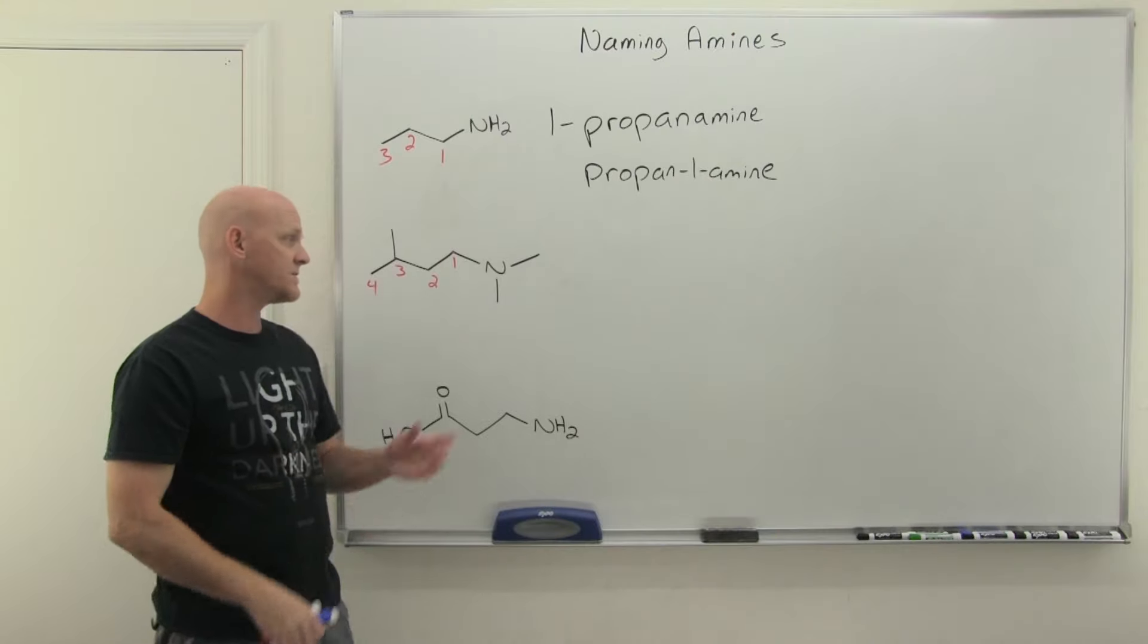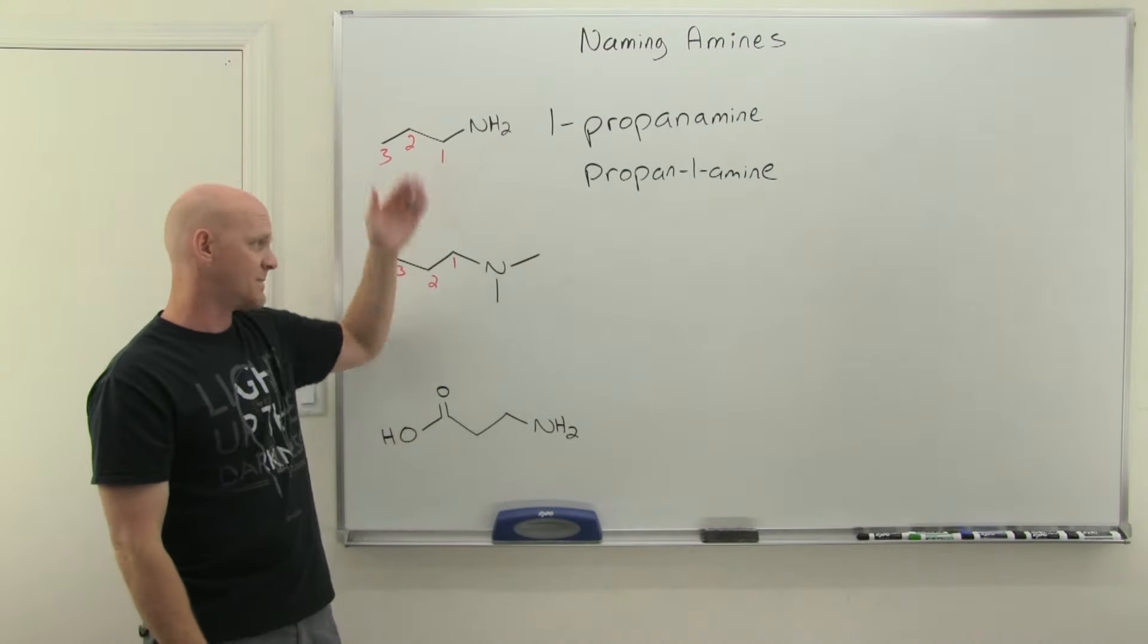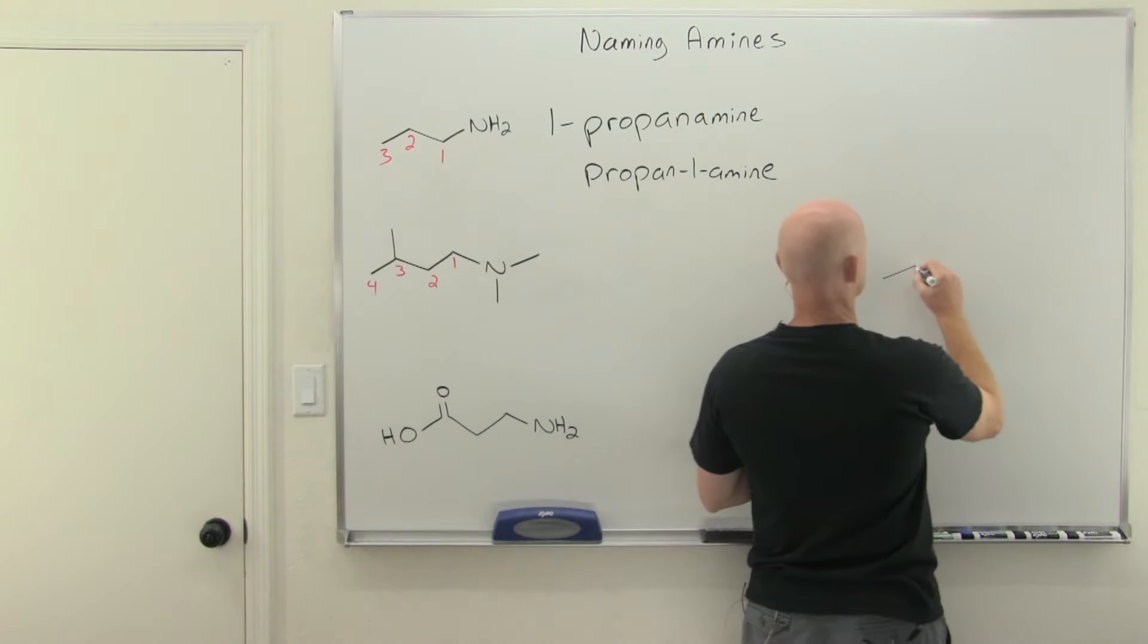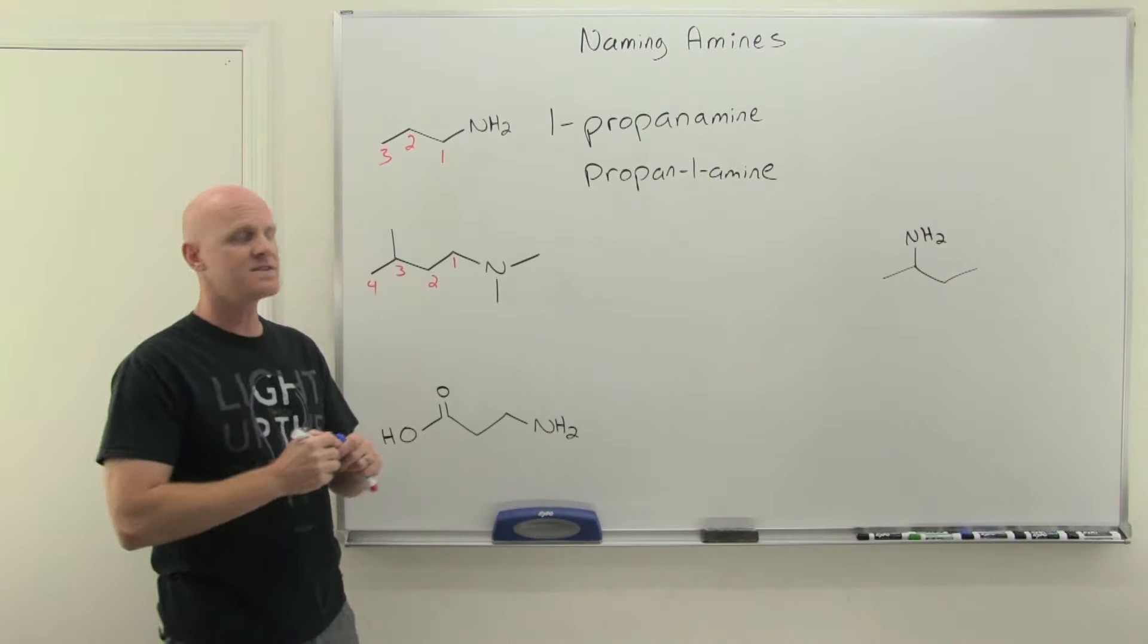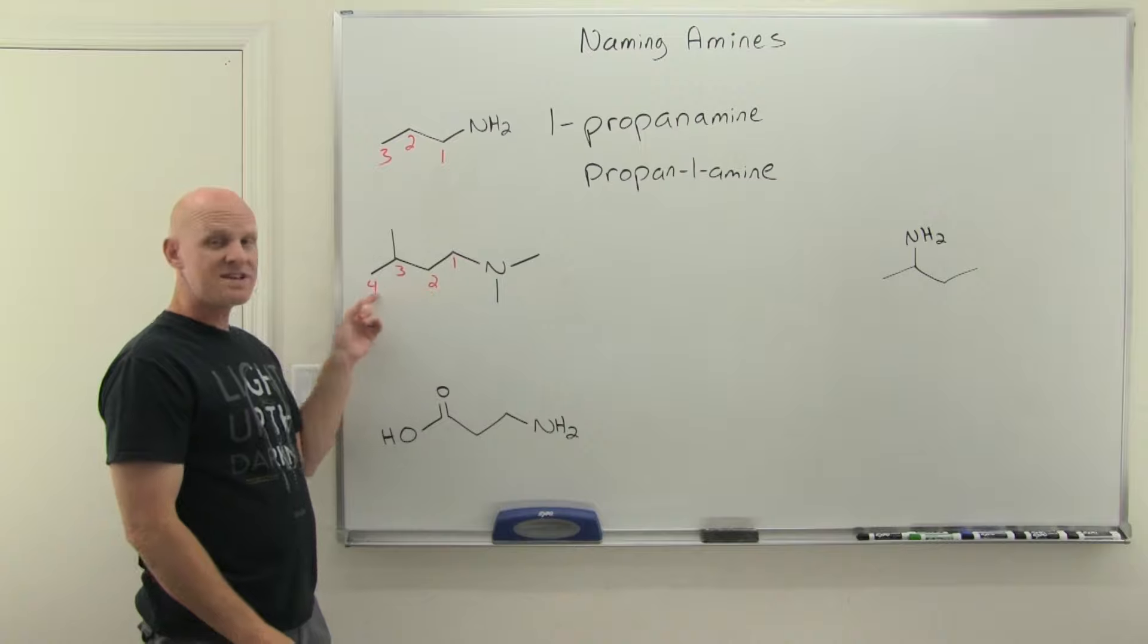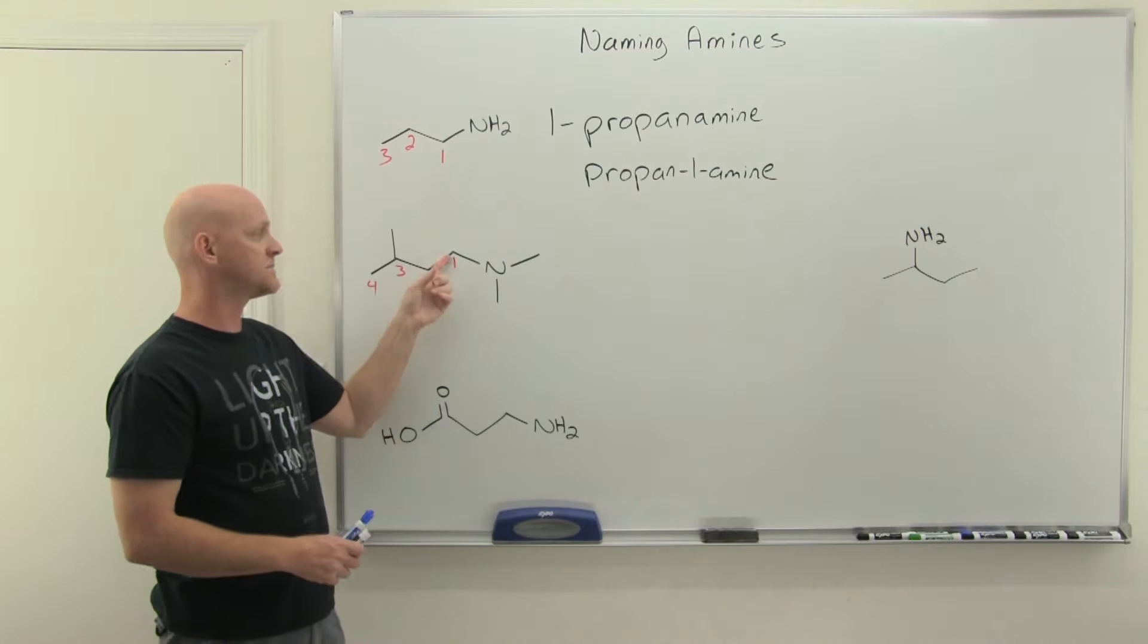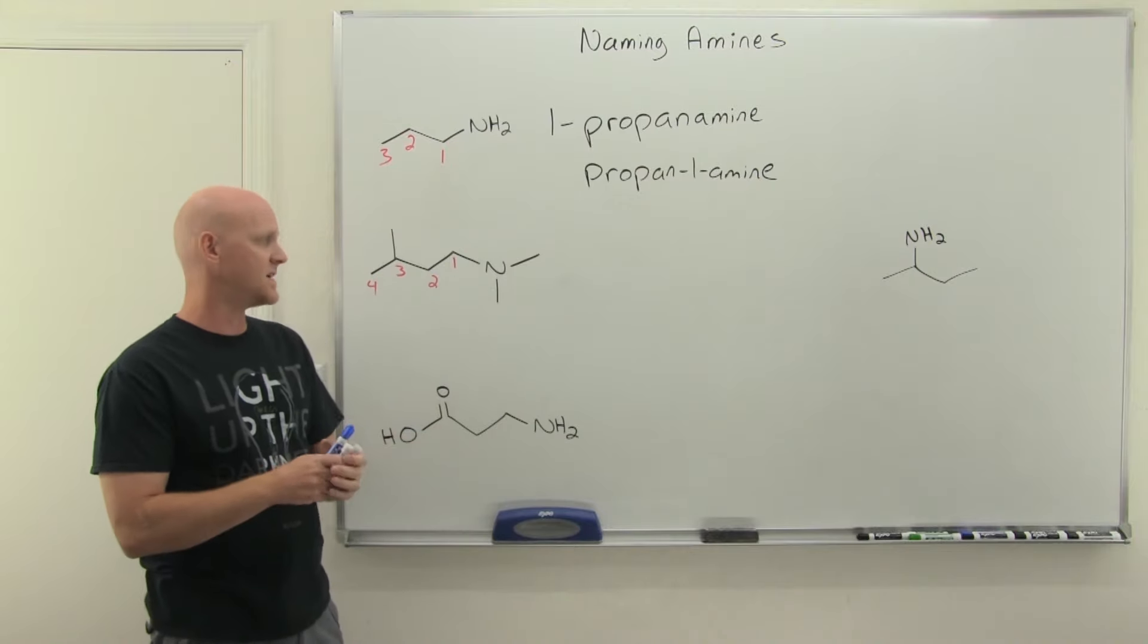One thing to note, there's nothing that says that your amine has to always come at position one. My two examples do, but your amine could have been in the middle of the chain. Nothing says it has to be at position one. If we're looking at the parent chain, then it's butane with the amine suffix, so butanamine. I've got to indicate that it's position one, so we could say 1-butanamine or butan-1-amine. That's our parent chain.